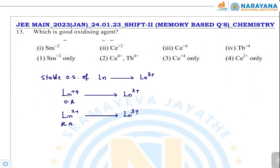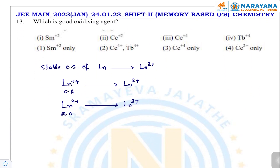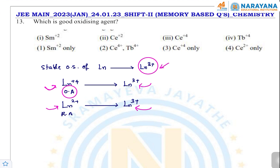The next question asks which lanthanide is a good oxidizing agent. The stable oxidation state of lanthanides is +3. Any +4 oxidation state lanthanide readily reduces to +3, acting as an oxidizing agent. Any +2 oxidation state lanthanide readily converts to +3, acting as a reducing agent. Therefore, lanthanides in the +4 oxidation state act as oxidizing agents.